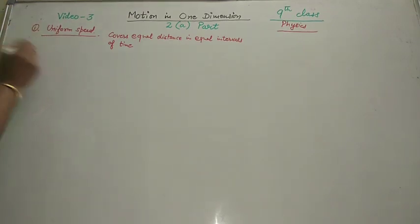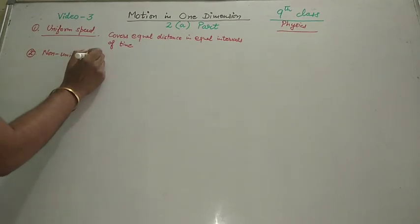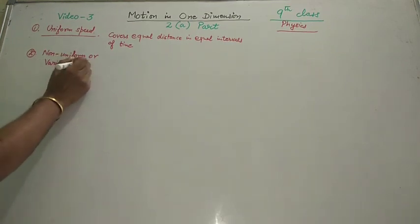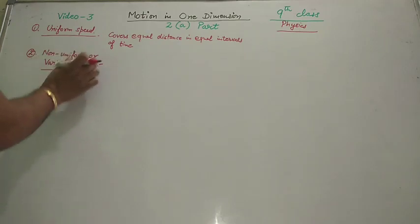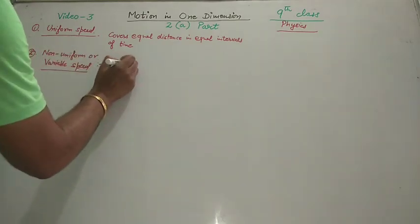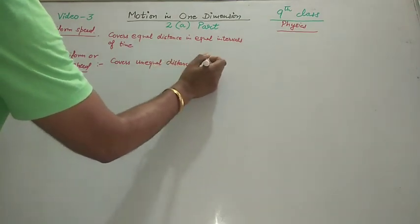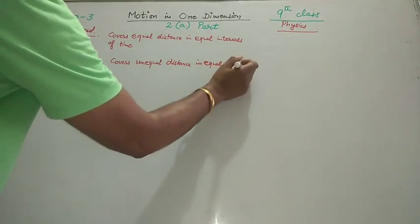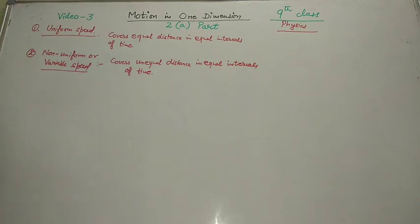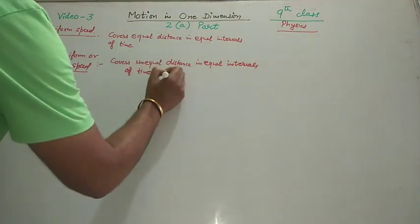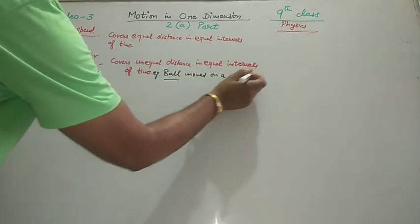Second is non-uniform or variable speed. A body is said to be moving with non-uniform or variable speed when it covers unequal distance in equal intervals of time. An example is a ball moving on a rough surface.